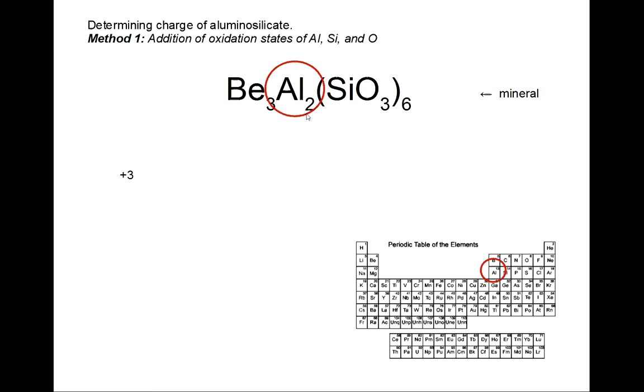So we start with the aluminum. Aluminum is in group 3 and therefore has an oxidation state of plus 3. There's two of them in the aluminosilicate formula, therefore we times it by 2 giving us plus 6 total for the aluminum.